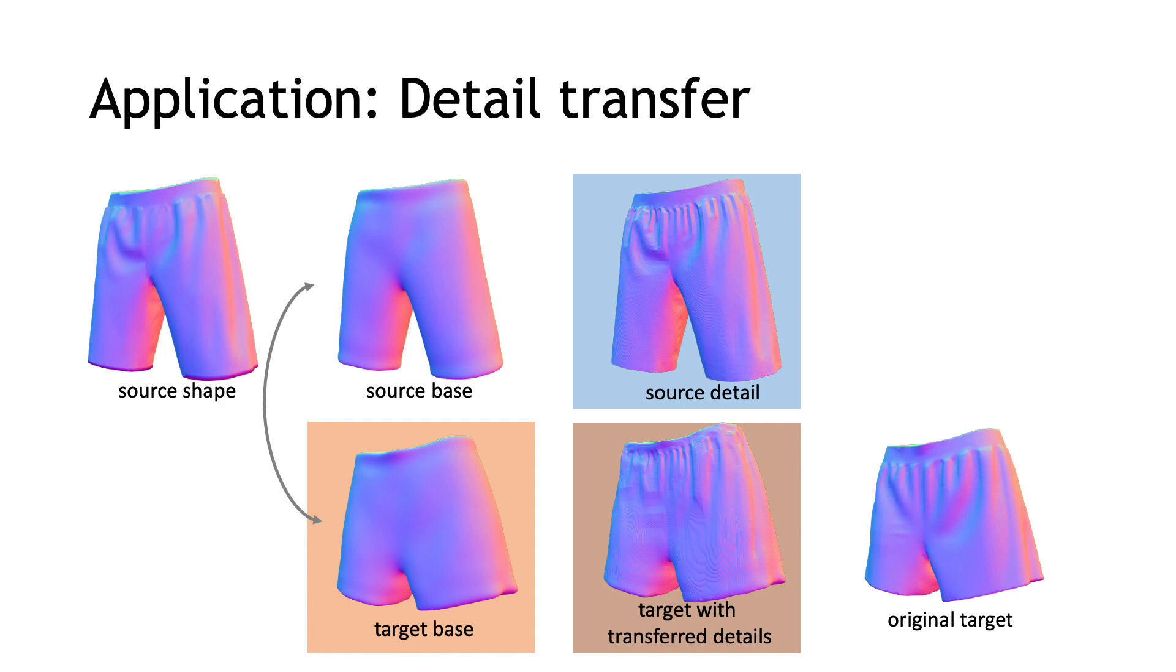Compared to existing detail transfer with explicit representation, implicit shape editing bypasses common artifacts such as self-intersections.